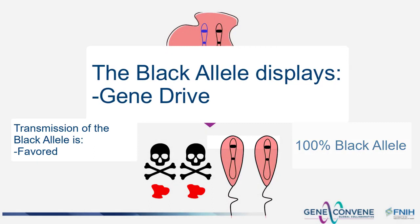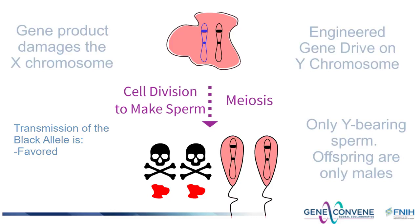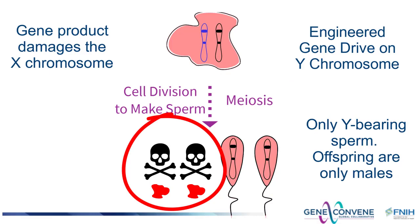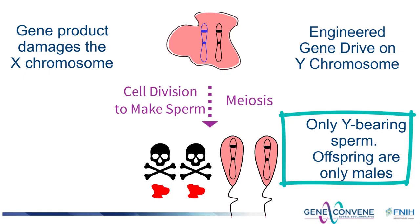Nonetheless, there is an example in mosquitoes in which the black allele — an engineered gene drive system — is on the Y, male-determining chromosome, and its gene product specifically damages the X chromosome during cell division, so that males with the engineered gene drive only produce Y-bearing sperm, which will result only in male offspring.